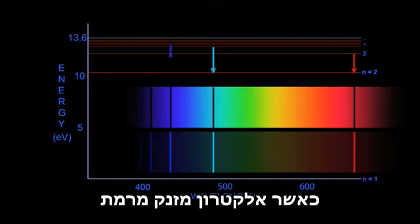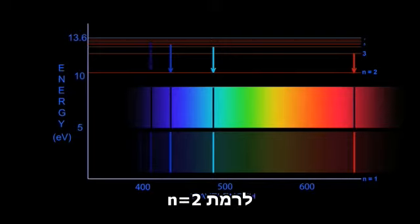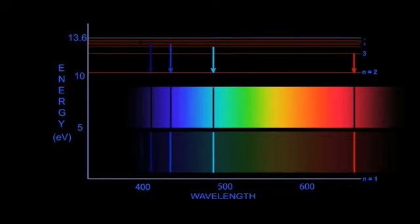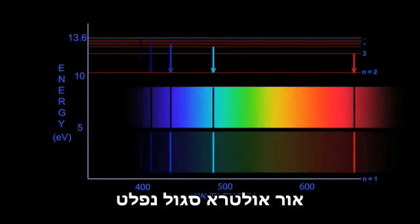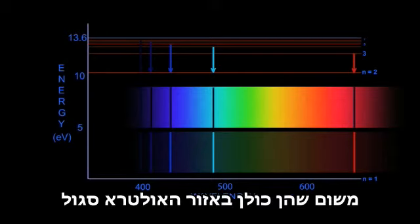When an electron jumps from the n equals 5 shell to the n equals 2 shell, blue light is emitted. When an electron jumps from the n equals 6 shell to the n equals 2 shell, violet light is emitted. When an electron jumps from the n equals 7 shell to the n equals 2 shell, ultraviolet light is emitted. No jumps to n equals 1 are shown because they are all in the deep ultraviolet.